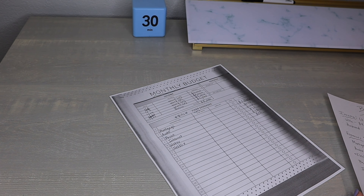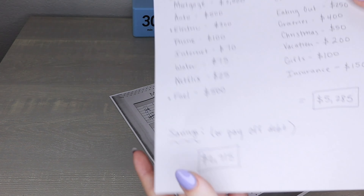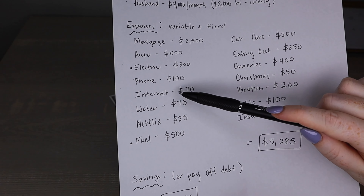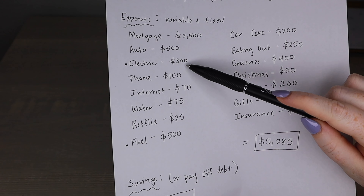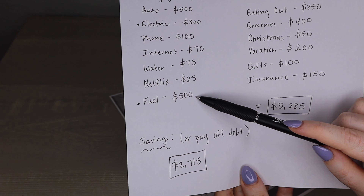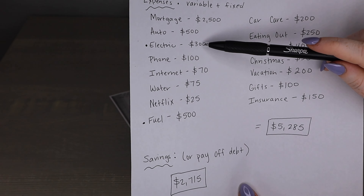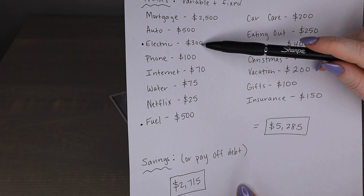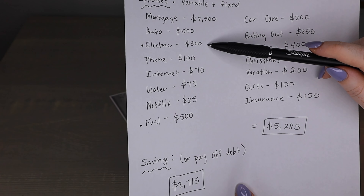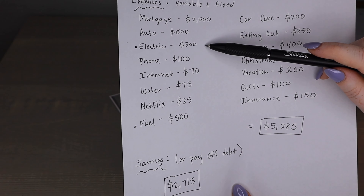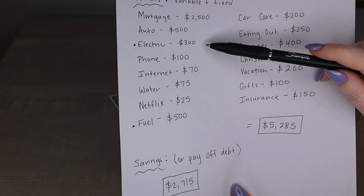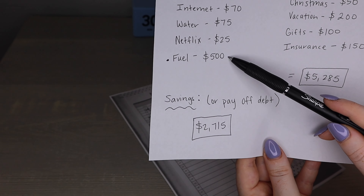You may have noticed I skipped over two expenses in my mock scenario: the electric bill and fuel. You're probably thinking — Lauren, you said fixed expenses don't change, and those two definitely change every month! I have these listed under fixed expenses because I define variable expenses as the cash expenses we use our cash envelopes for. I don't like paying cash at the gas pumps, and the electric bill is still a monthly bill we must pay.